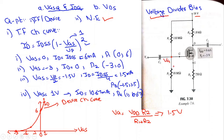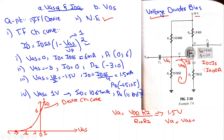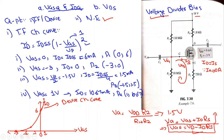Now applying KVL, since IG = 0 for a FET, ID = IS. Applying KVL around the gate-source loop gives: VG = VGS + ID×RS, which rearranges to VGS = VG − ID×RS. This is the network equation that we need to plot to get the load line curve.